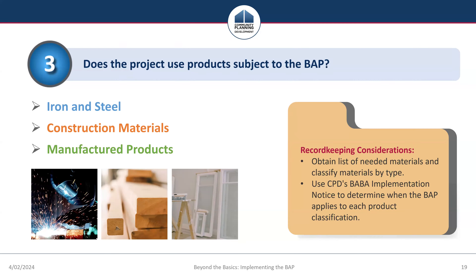Moving into Step 3 of the analysis: does the project use products subject to the BAP? For purposes of the Buy America preference, grantees should review the materials list for a project and classify materials into one of three possible categories: iron and steel products, construction materials, and manufactured products. Grantees are encouraged to start with the full list of materials needed to construct a project, then classify them and use CPD's BABA implementation notice to determine when the Buy America preference applies to each product classification. The Buy America preference may only apply to some classifications based on where the project falls in the phased implementation schedule.